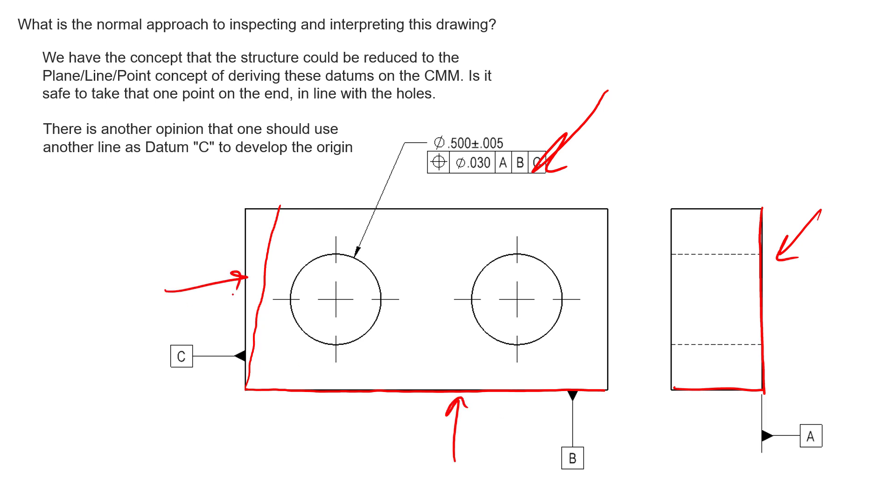We might take an equivalent of six points on that back surface. Now three of those points digitally with the CMM will be used to create a single datum plane, but that just takes into account if there's any form here. We're taking those three high points that we establish from our point cloud and creating datum plane A.